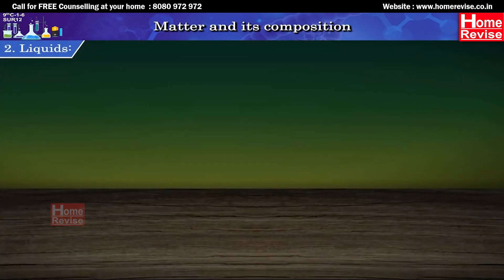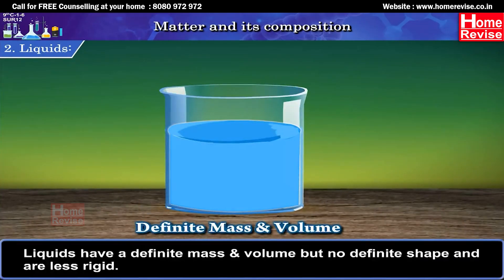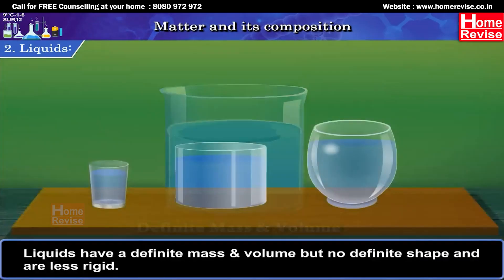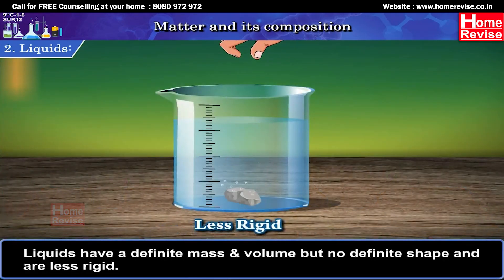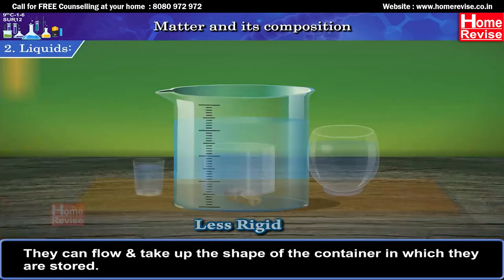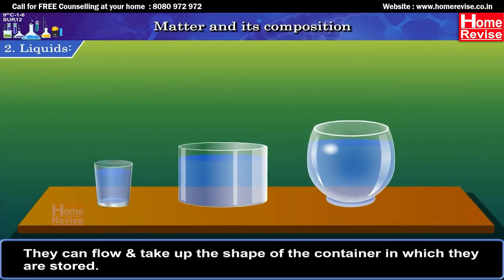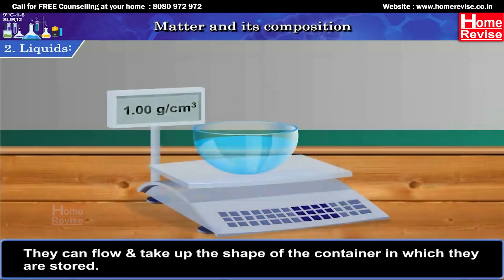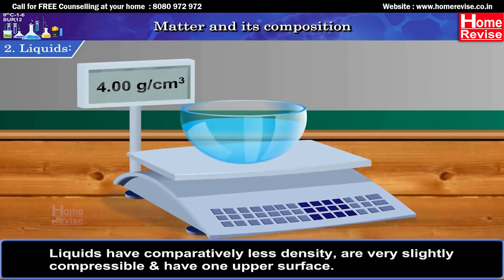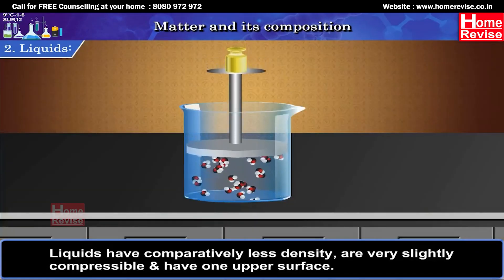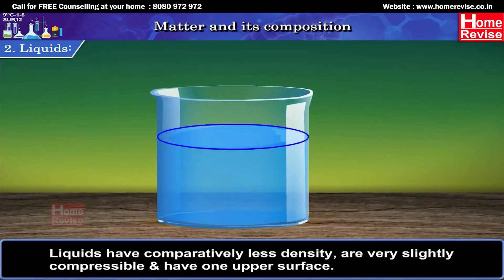Second, liquids. Liquids have a definite mass and volume but no definite shape and are less rigid. They can flow and take up the shape of the container in which they are stored. Liquids have comparatively less density, are very slightly compressible and have one upper surface.